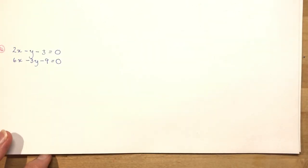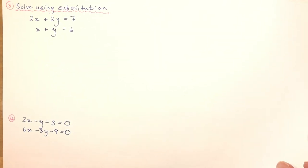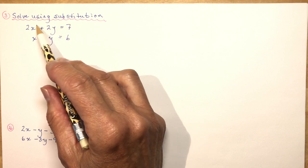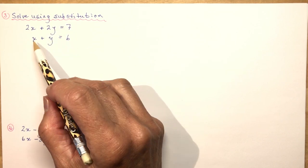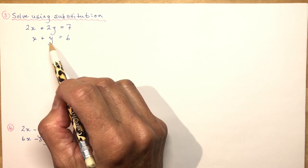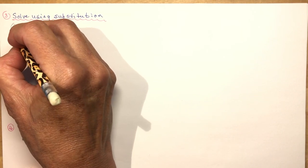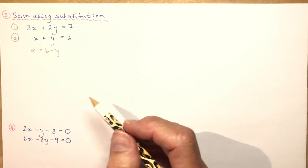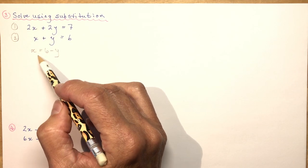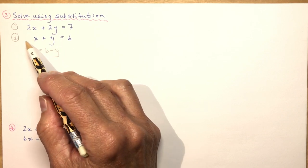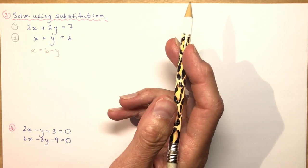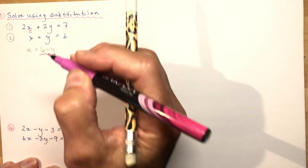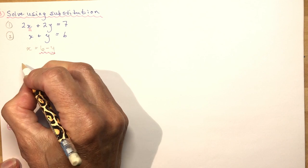Let's look at a case with some difficulties. Solve using substitution: since both equations have a coefficient of 1, you can isolate either variable — x equals 6 minus y or y equals 6 minus x. Let's solve for x: x equals 6 minus y. Now substitute into the other equation — not back into the same one, because that just gives 6 equals 6 and you haven't found anything.